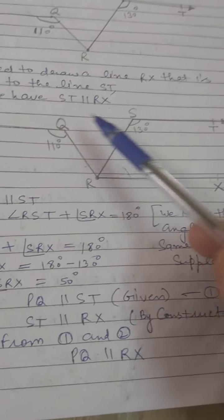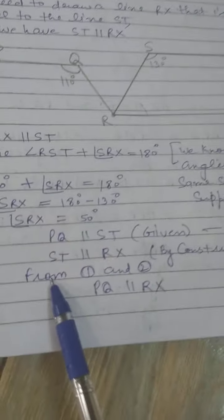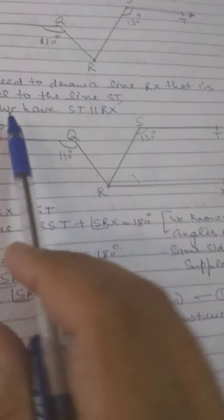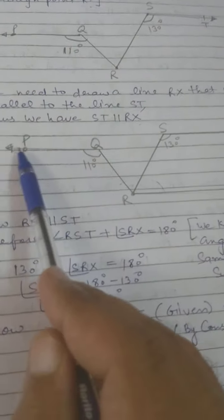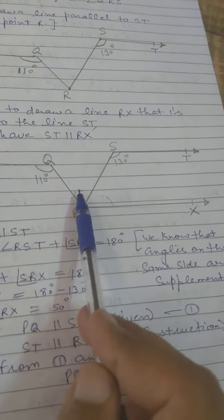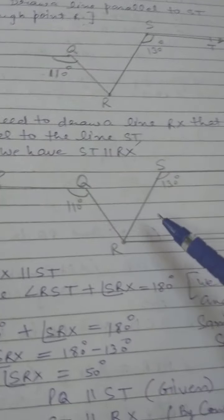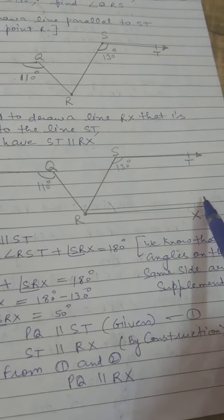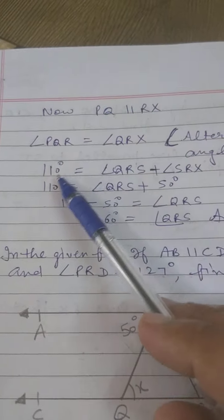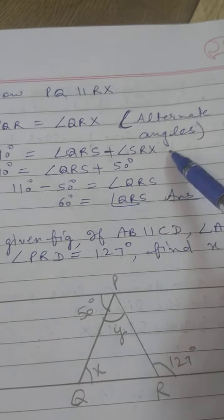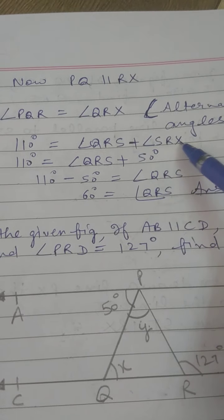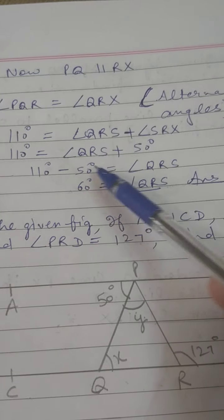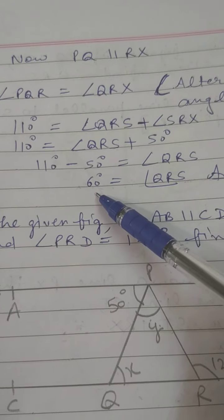Now PQ is parallel to ST, and ST is parallel to RX by construction, so PQ is parallel to RX. Therefore angle PQR equals angle QRX as alternate interior angles. We can write angle QRX as angle QRS plus angle SRX. So 110° equals angle QRS plus 50°, giving angle QRS equals 110° minus 50° equals 60°. Therefore angle QRS equals 60°.